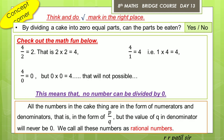No number can be divided by 0. All the numbers in the cake example are in the form of numerator and denominator — that is, in the form of P upon Q. But the value of Q in the denominator will never be 0. We call all these numbers as rational numbers, but the value of Q in the denominator will never be 0.